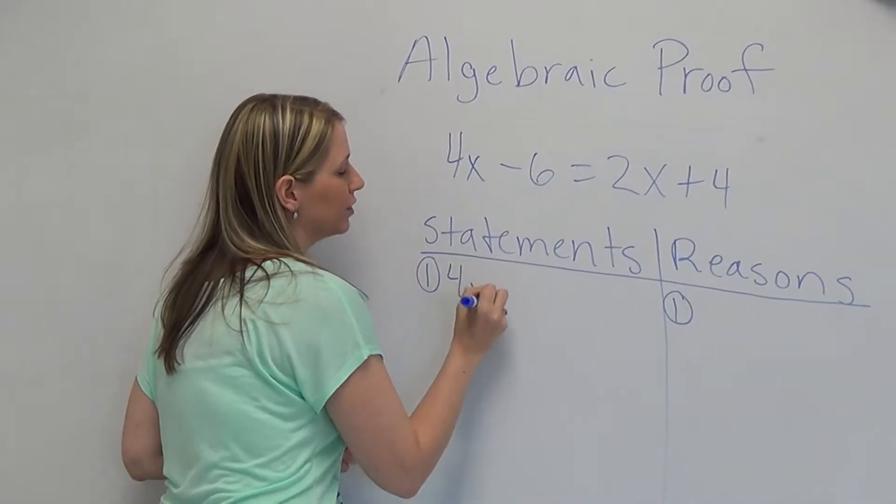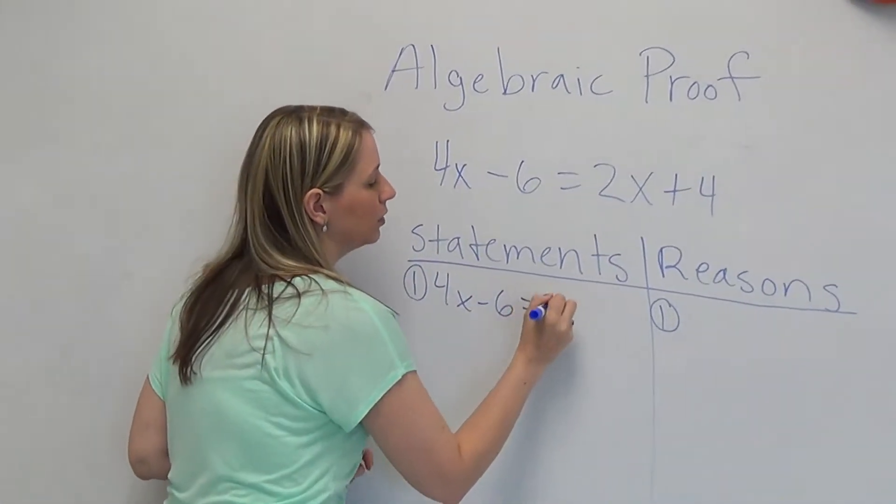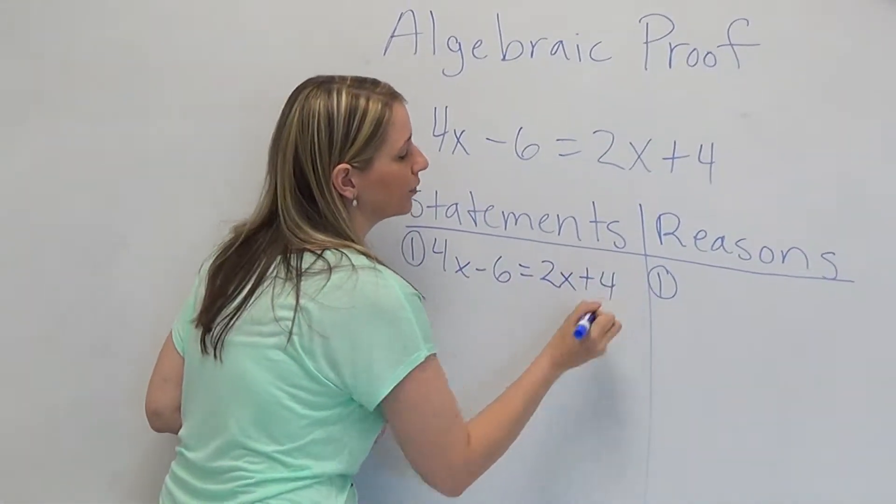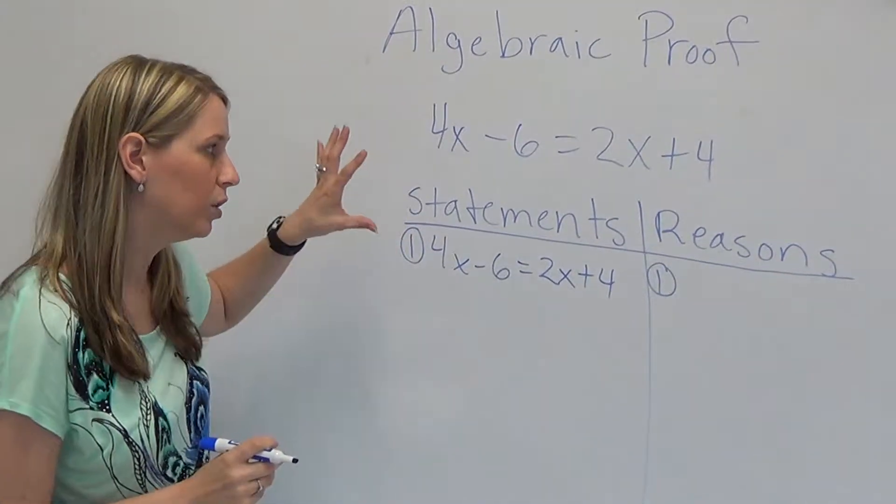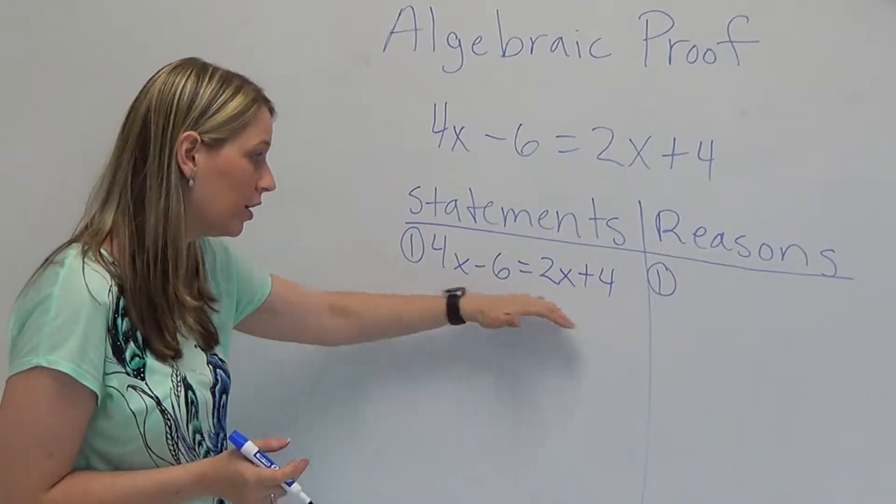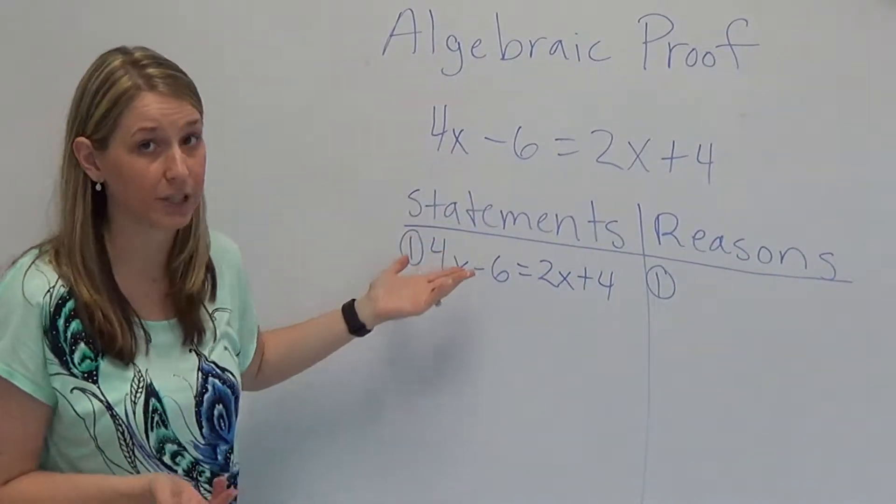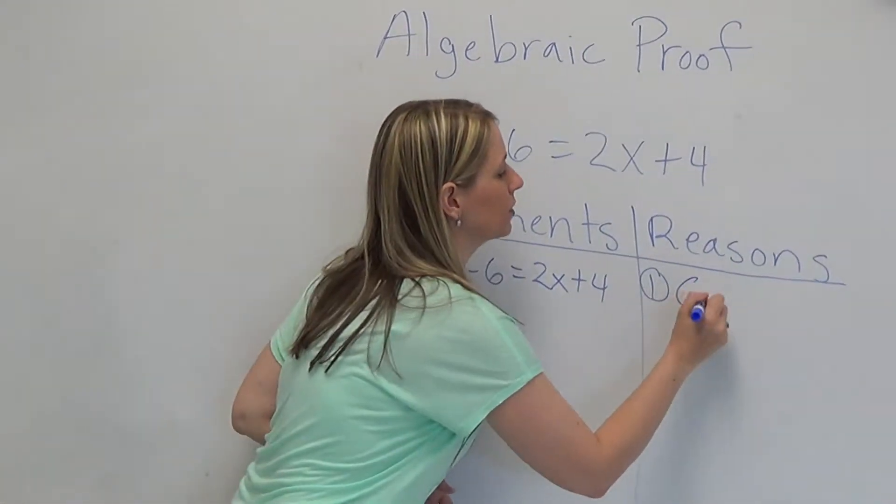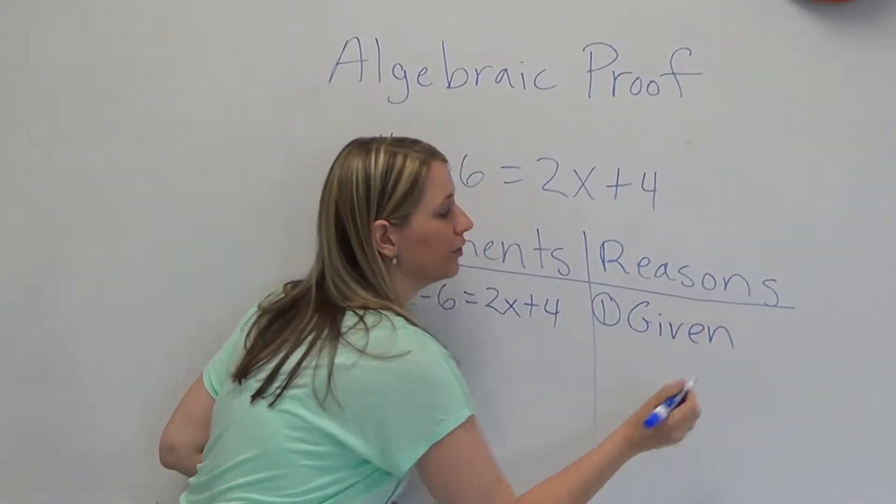So my actual equation is 4x minus 6 is equal to 2x plus 4. Now the statements is the actual truth part and the reason is why. So how do I know this is true? That's what I was given in the beginning. So I just write given as my reason.